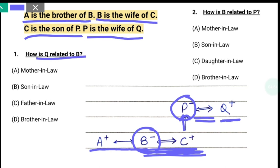Question 1: How is Q related to B? जब भी हमें ये देखना है Q is related to B, तो हम B से होते हुए Q की तरफ जाएंगे। B के husband हैं C, और C की mother P, और C के father Q। तो directly देखो C के जो father हैं वो Q हैं। तो B के husband हैं C, और husband के father Q। Husband के father जो होते हैं, वो होते हैं father-in-law। तो I guess सभी ने इसका answer दिया था C option father-in-law।